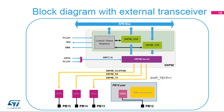It is also possible to connect an external transceiver using a configuration bit in the SWPMI registers. In this case, the suspend, receive, and transmit signals are available on pins PB15, PB14, and PB13. Pin PB12 can then be used as a standard GPIO.